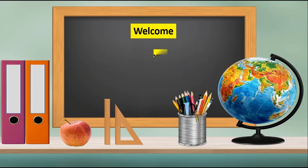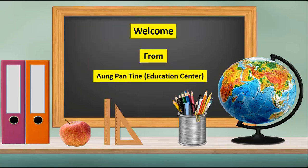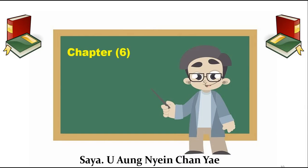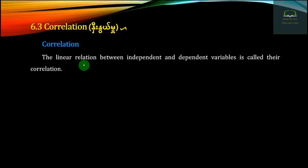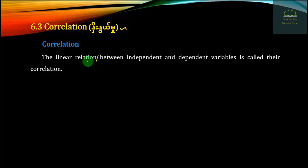Good evening. The linear relation between independent and dependent variables is linear. This is the independent and the dependent variables. The independent variable can be used in the dependent variable. This is the same as the correlation which I do in the dependent variable.